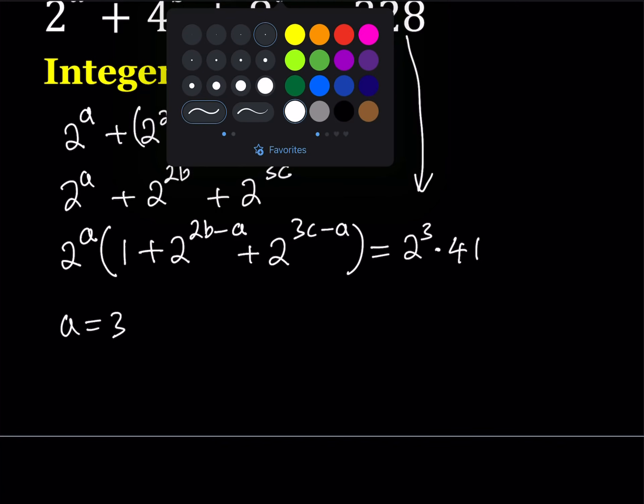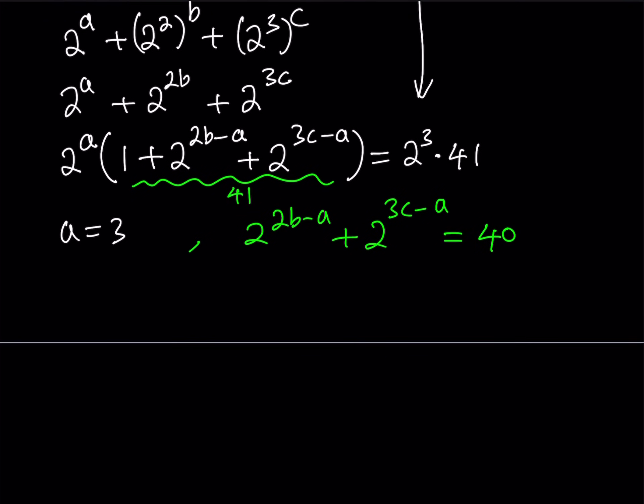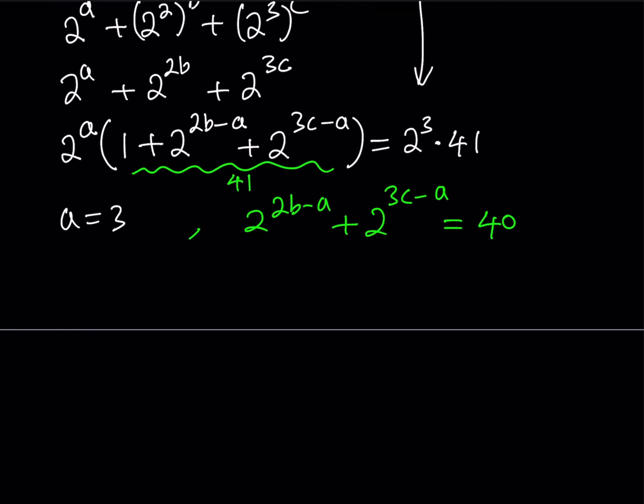That's one of the conclusions we're getting. What about the other one? Well, we can also say that this piece here, since 2 to the power a equals 2 to the power 3, this piece must equal 41. But that implies that 2 to the power 2b minus a plus 2 to the power 3c minus a equals 41 minus 1, which is 40.